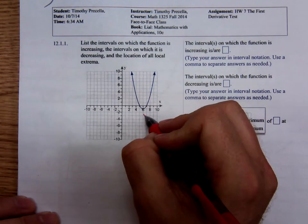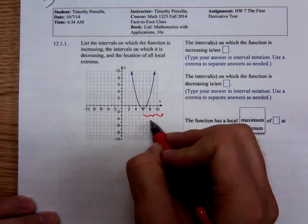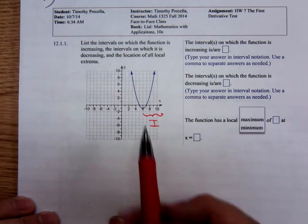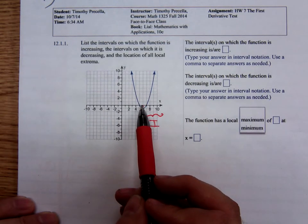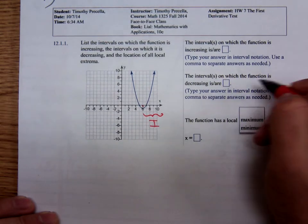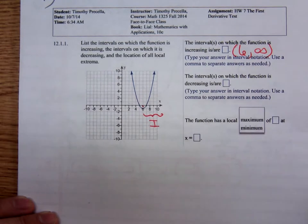Out here, on this interval, the graph is rising from left to right. So it's increasing. Where is it increasing? It starts at 6 on the x-axis and goes on out. So it's increasing on the open interval from 6 to infinity.